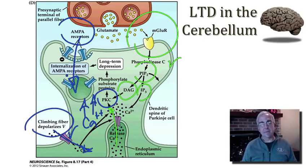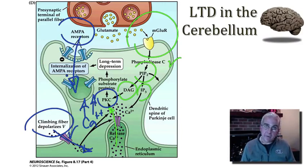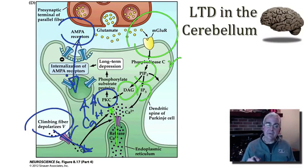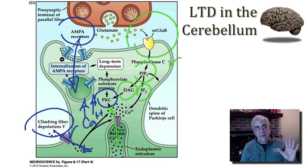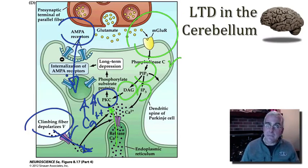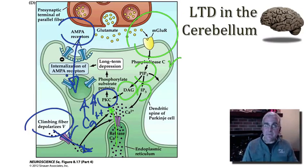Let's be clear: in the cerebral cortex, high levels of calcium lead to potentiation — but in the cerebellar cortex, high levels of calcium lead to depression. The difference has to do with the second messenger cascades and the consequence of activating those cascades. In the cerebral cortex, those cascades end up inserting AMPA receptors into the post-synaptic membrane. But here in the cerebellum, a different cascade leads to the internalization of AMPA receptors and the depression of that synaptic connection.